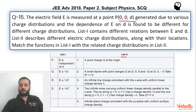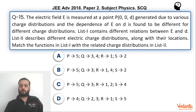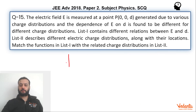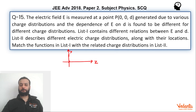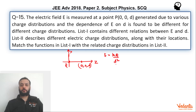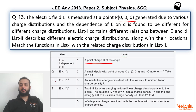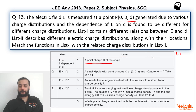If you talk about the first configuration — a point charge kept at origin — let's take this to be the Z-axis and this to be the X-axis. If the point charge is kept at the origin and the point P is at (0, 0, D), the electric field is very simple. It will be KQ by D square. So E will be proportional to 1 by D square. We can say that R will match with 1.